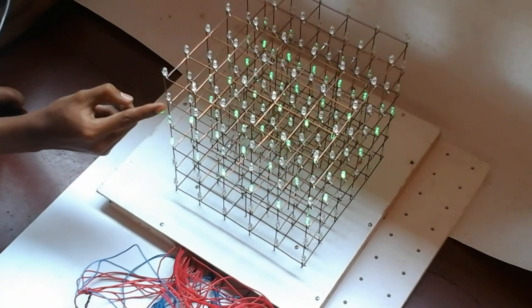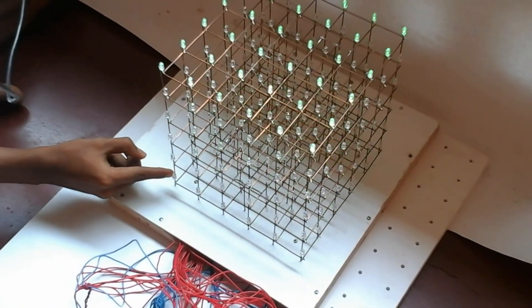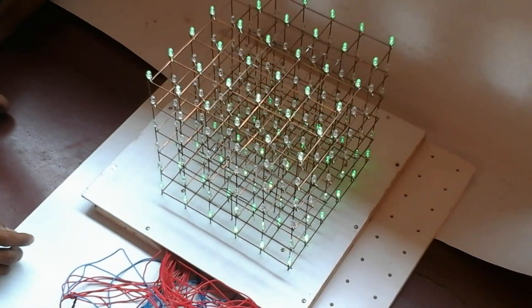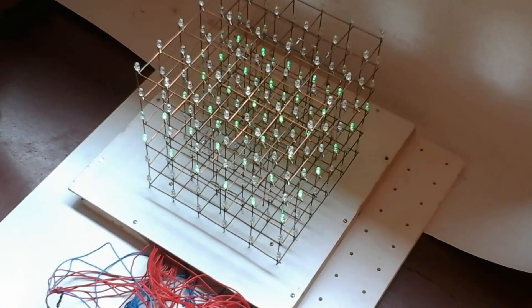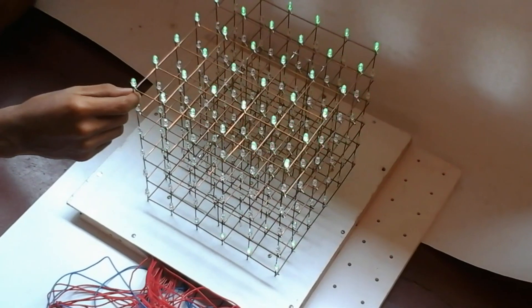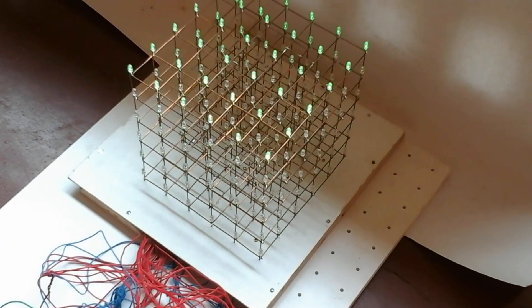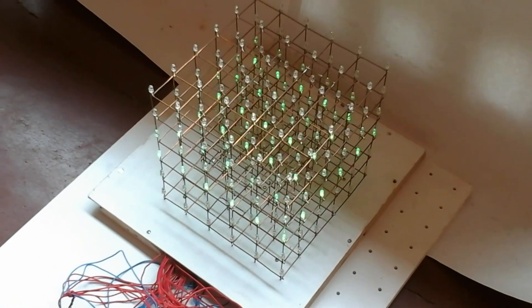This will give six common anode terminals, and the cathode terminals of all vertical LEDs are interconnected to form 36 cathode terminals. So in total, there will be 42 terminals out of which 36 will be cathode terminals and six will be anode terminals.